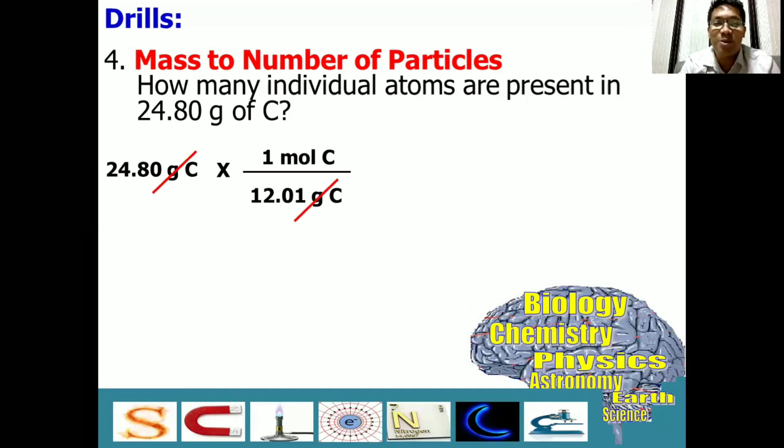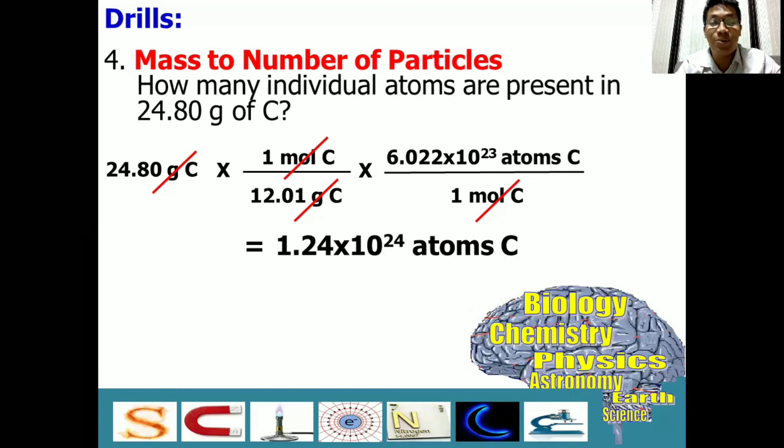And we're not yet done. Let's proceed to the next step. We have to multiply it with Avogadro's number over one mole, because our target is to eliminate the unit of mole. So, we can cancel them out. And get your calculator and try to solve this problem. And our answer is 1.24 times 10 raised to 24 power. And our unit is atoms. So, this many atoms are present in 24.8 grams of carbon sample.